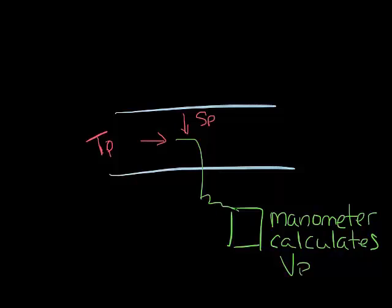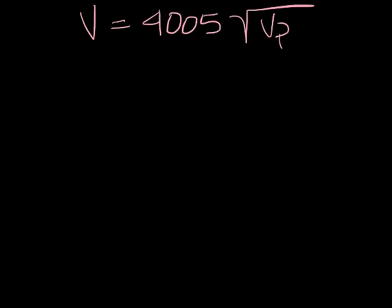Knowing the velocity pressure allows us to calculate the velocity in the ductwork. The equation for velocity is velocity equals 4005 times the square root of velocity pressure. Now knowing the velocity and area of the ductwork, we can calculate airflow, which is CFM equals the area times the velocity.